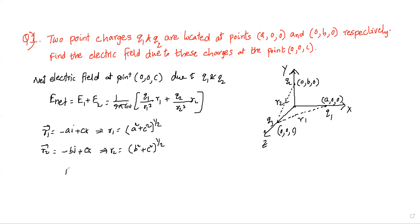Therefore E_net is equal to 1/(4πε₀) into Q1 times (-Ai + Ck)/R1³, which means (-Ai + Ck)/(A² + C²)^(3/2), plus Q2 times (-Bj + Ck)/(B² + C²)^(3/2). So this is the net field.